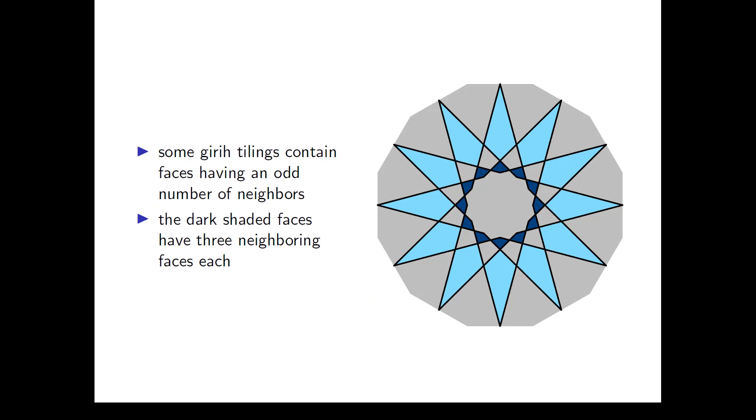Whereas the so-constructed Geary tilings always have even valences of crossing points, there may be faces with an odd number of neighbor faces, such as the dark faces in this image, which have three neighbor faces each. Here it is not possible to have alternating solid and dashed lines around these faces.